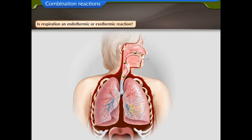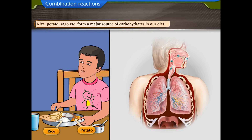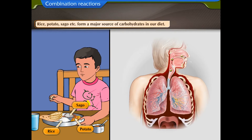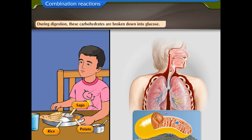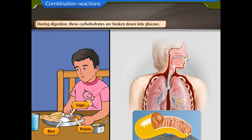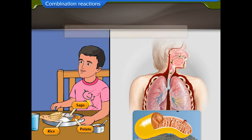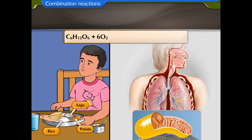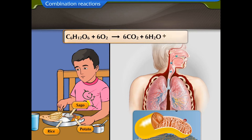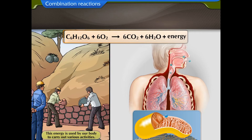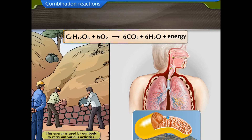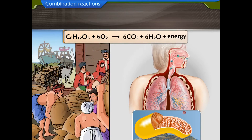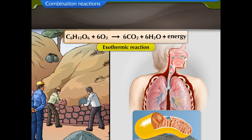Is respiration an endothermic or exothermic reaction? Rice, potato, sago etc. form a major source of carbohydrates in our diet. During digestion, these carbohydrates are broken down into glucose. When the process of respiration takes place, glucose combines with oxygen in our body and liberates heat and energy. It is this energy which is used by our body to carry out various activities. Thus, we can classify respiration as an exothermic reaction.